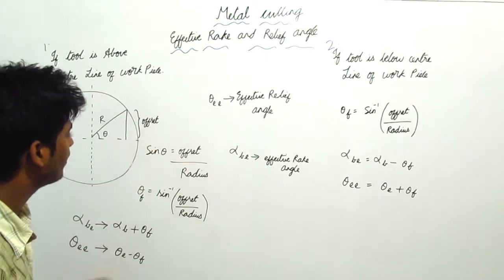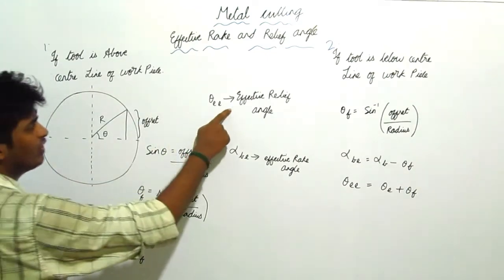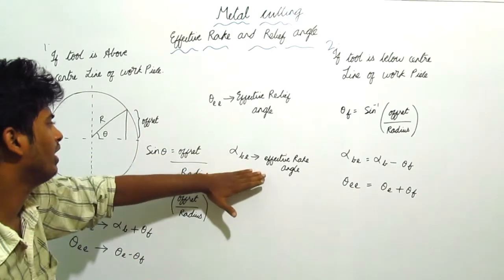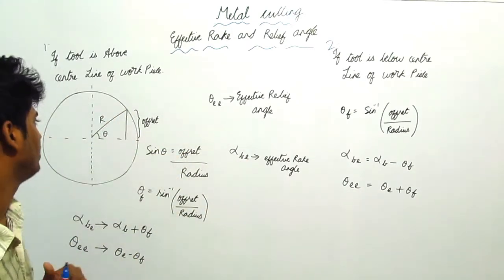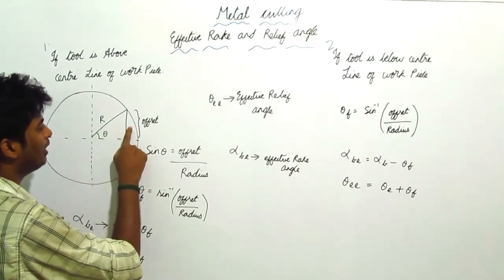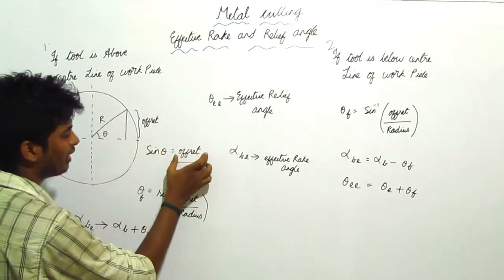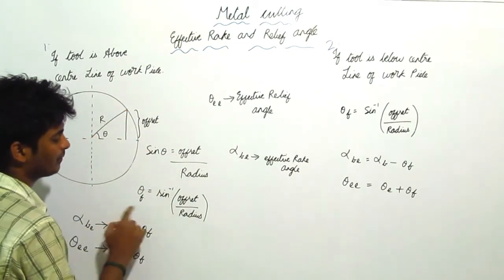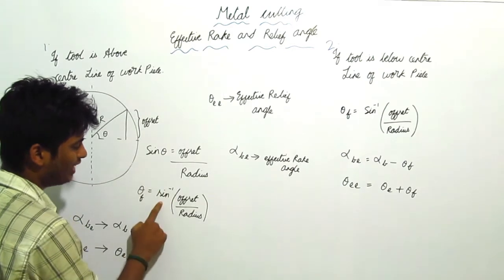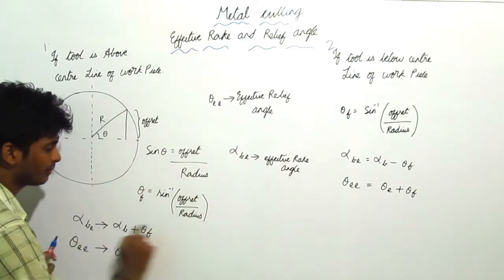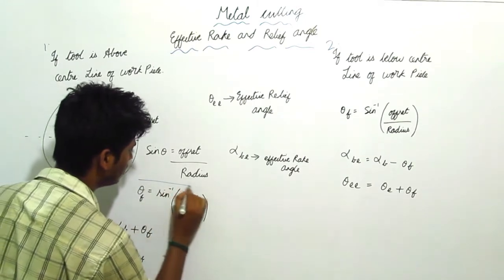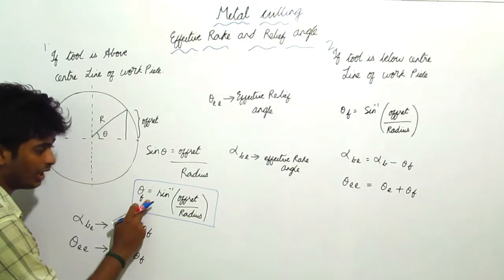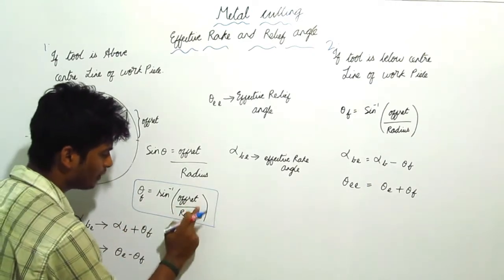For this case, we have to find the Effective Relief and Effective Rake angles. Using trigonometry: sin(θ) = opposite / hypotenuse, where the opposite is the offset and the hypotenuse is the radius. So the offset angle θ_f = sin⁻¹(offset / radius).